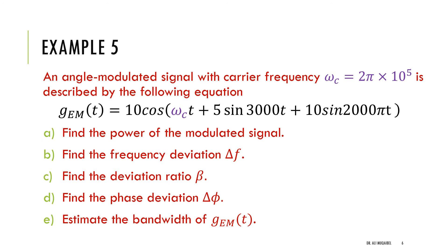Here is Example 5. An angle-modulated signal with carrier frequency ω_c = 2π×10⁵ rad/s is given. The signal is called a GEM (exponential/angle modulated) signal — it does not specify whether it is FM or PM. The questions are: find the power of the modulated signal, find the frequency deviation, find the modulation index beta, find the phase deviation, and estimate the bandwidth.